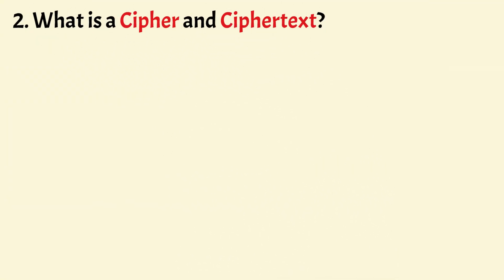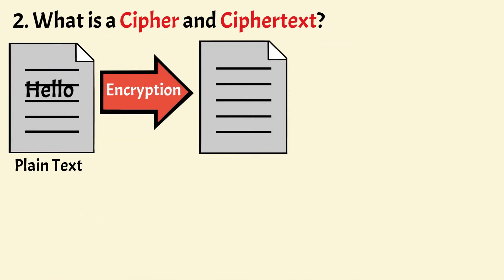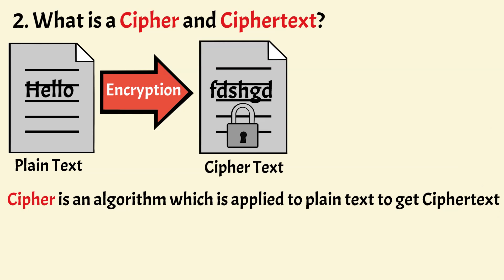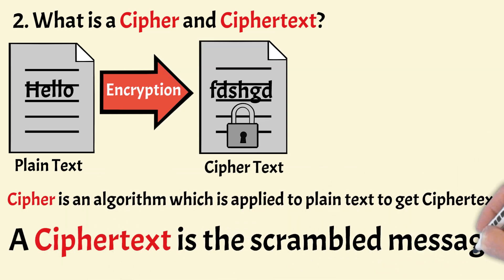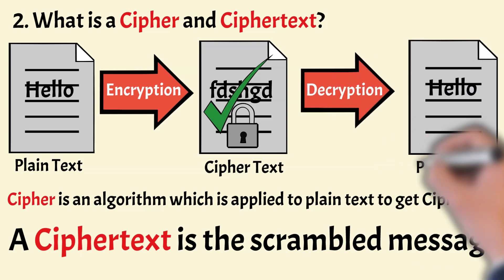What is cipher and cipher text? A cipher is an algorithm that scrambles a plain message in order to hide its actual meaning and prevent it from being viewed by those who are not intended to view the message. In short, a cipher is an algorithm applied to plain text to get cipher text. A cipher text is a scrambled message which doesn't make sense to anybody, and its original message can only be revealed after it is unscrambled by the same cipher.